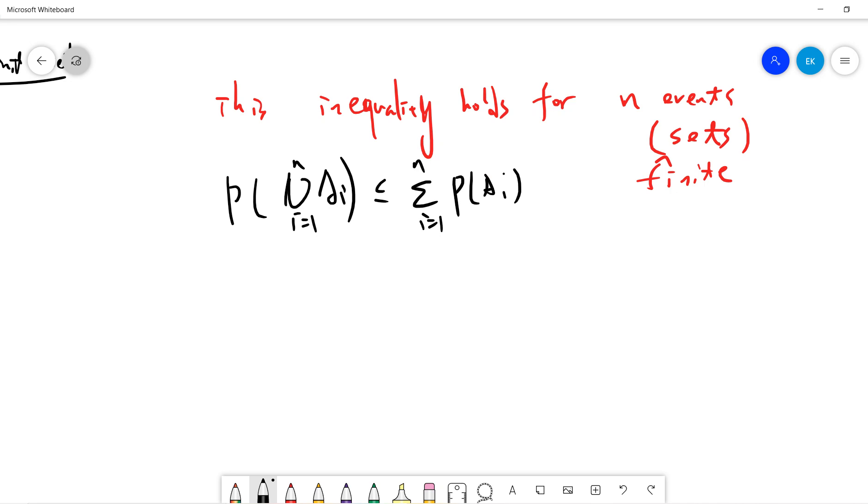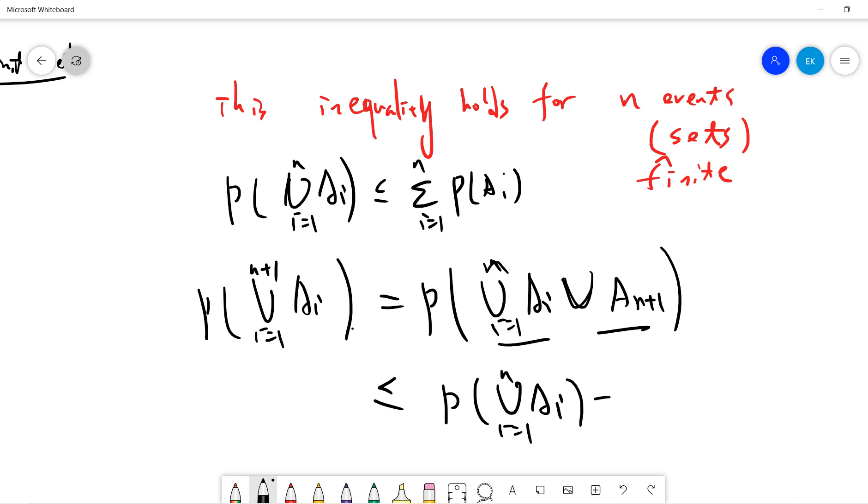Then we hope to use induction to prove n plus one. So let's take i from 1 to n+1. This is the same as union Ai from i=1 to n, intersection with A(n+1). From the Venn diagram results, we know that this equals P(union Ai from i=1 to n) plus P(A(n+1)).